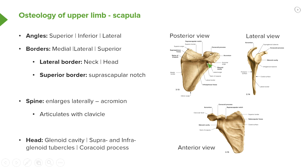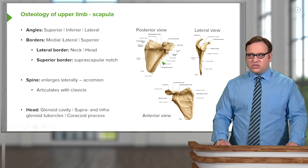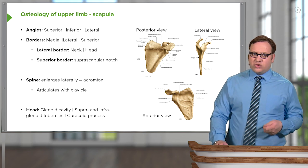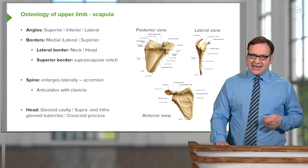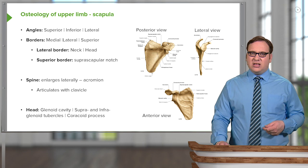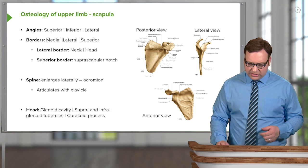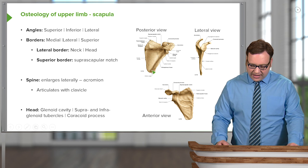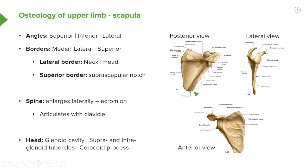The superior angle is connected to the lateral angle by way of the superior border, and the lateral angle is connected to the inferior angle by way of the lateral border. So on the scapula we have three angles — superior, inferior, and lateral — connected via the medial, lateral, and superior borders, all of which we can see on the screen.